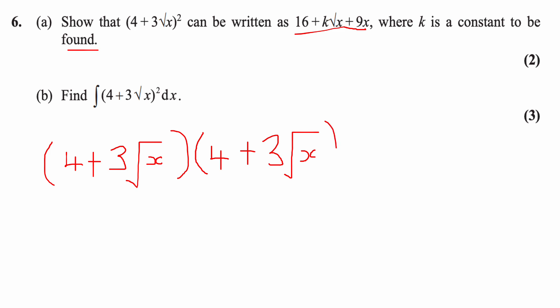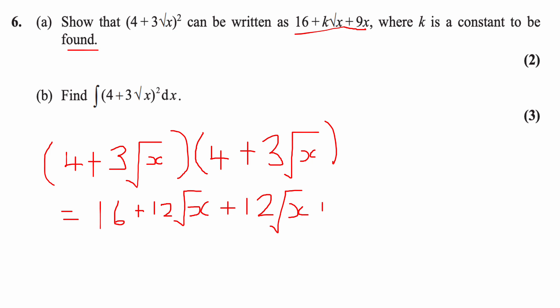Expanding term by term: 4 × 4 = 16; 4 × 3√x = 12√x; 3√x × 4 = 12√x; and 3√x × 3√x gives 3 × 3 = 9, and √x × √x = x. So collecting like terms gives 16 + 24√x + 9x.